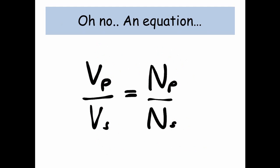Okay, here's our first equation that we need to be aware of. It's V subscript P over V subscript S equals NP over NS. But what do they mean? Well, Vp is the primary voltage, Vs is the secondary voltage, the voltage at the secondary coil.